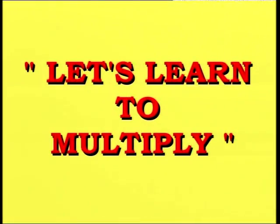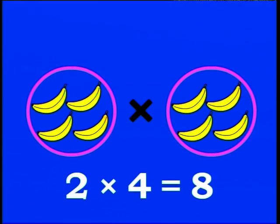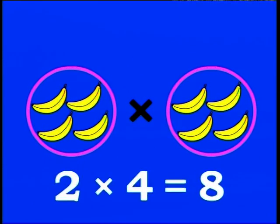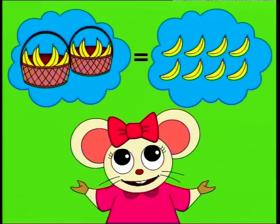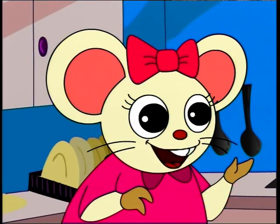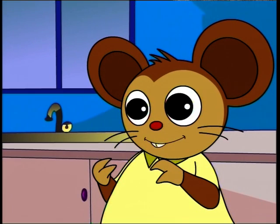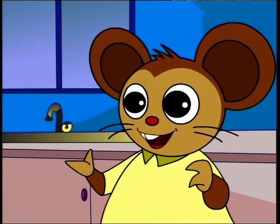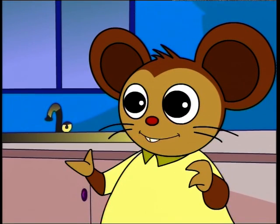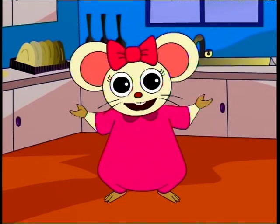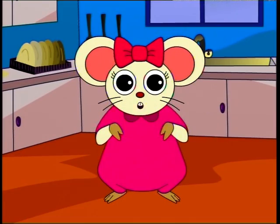Let's learn to multiply. It's like this: two multiply four is equal to eight. So, there are eight bananas all together. Do you understand, Adam? Okay, I get it. But Aisha, how did you get the answer so fast? Oh, we have to learn our multiplication table, or times table, to do that. Follow me, I'll show you.